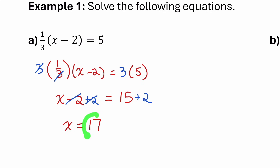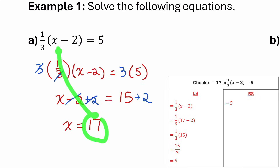Don't forget to substitute that back into the original equation to verify the correct answer. When subbing it in, 17 minus 2 is 15, and a third of that is 5. So 17 is the correct answer.